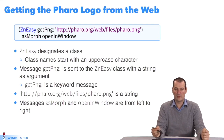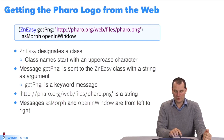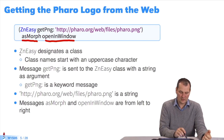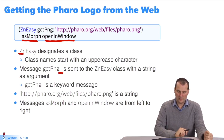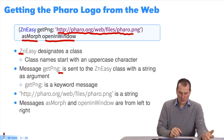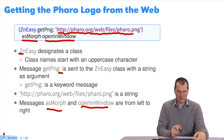A more complicated example: imagine you want to take the Pharaoh logo from the web. You do it this way. You do ZnEasy get png with a string which represents the URL of the resource you want to read. And once again, you convert it into a graphic object and ask it to open in a window. So we see that ZnEasy is a class because classes start with a capital. The colon of the message get png means I'm expecting an argument, which is the string http://pharaoh.org. This string is the argument of the method get png. The messages as morph and open in window are read from left to right. So you can cut and paste this code, or retype it in Pharaoh, and you'll get the Pharaoh logo.